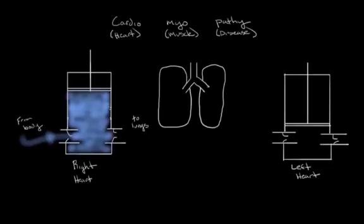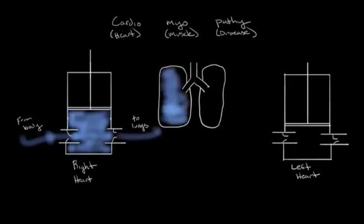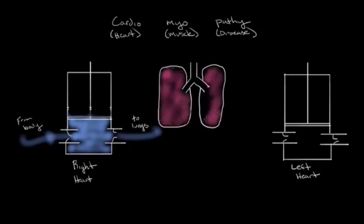So now that the right heart has drawn blood into it from the body, it's now going to pump that blood to the lungs. Then once in the lungs the blood is oxygenated.